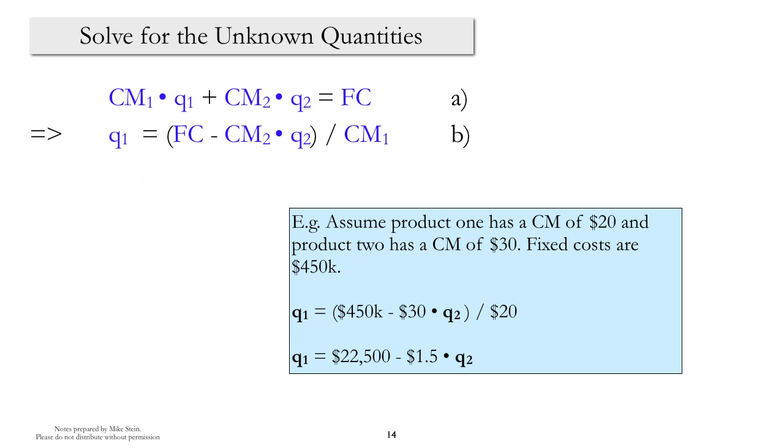Well, in algebra class, we would say that the system was underdetermined. And what this means is there's not enough information to uniquely identify Q1 and Q2. So the question then is, how can we resolve this problem?